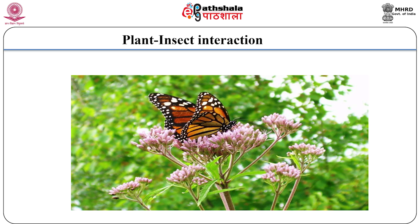Depletion of shared resources by closely related, morphologically similar species would favor phenotypes exploiting new, unused resources, leading to divergence. Several examples show that differences between species are greater where they occur together in sympatry than where they occur individually in allopatry. The most memorable case was of two ground finches, Geospiza fuliginosa and Geospiza fortis — two species with partly overlapping geographic ranges that exhibit greater differentiation in sympatry than in allopatry.